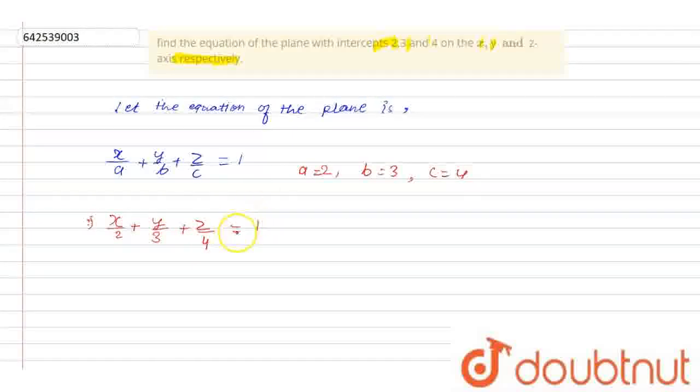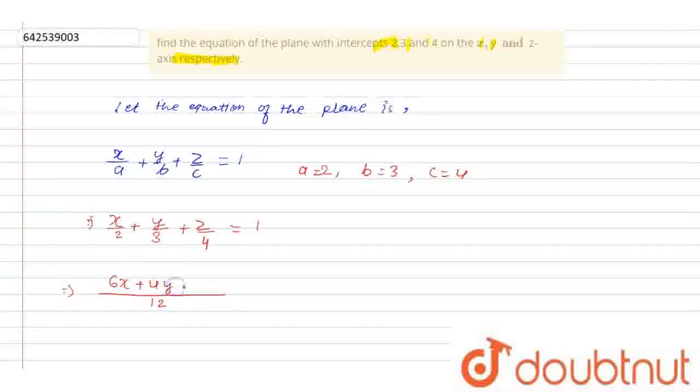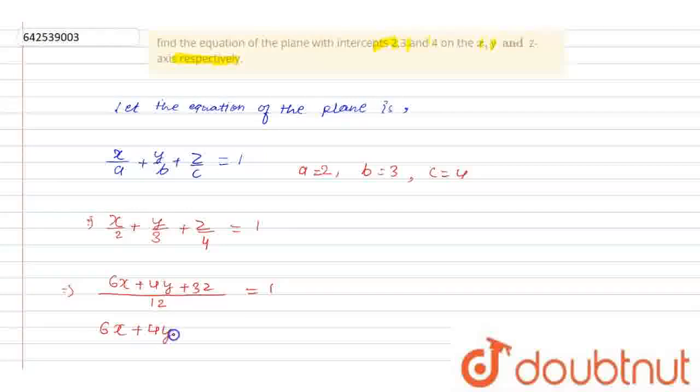So, this is the answer for this question. Or, we can write it also by taking the LCM. The LCM is 12. So, it will be 6x plus 4y plus 3z equals to 12.